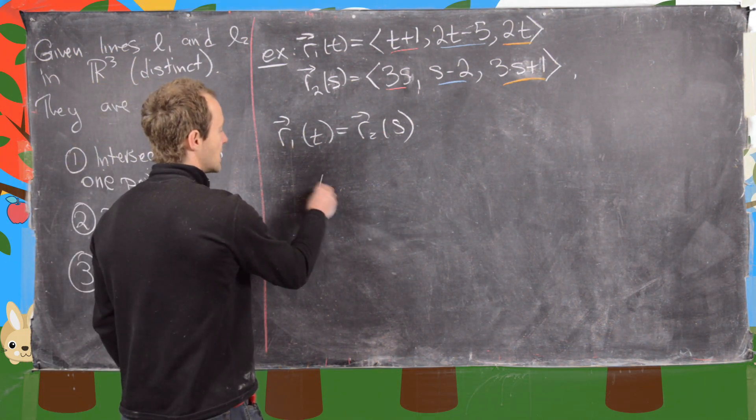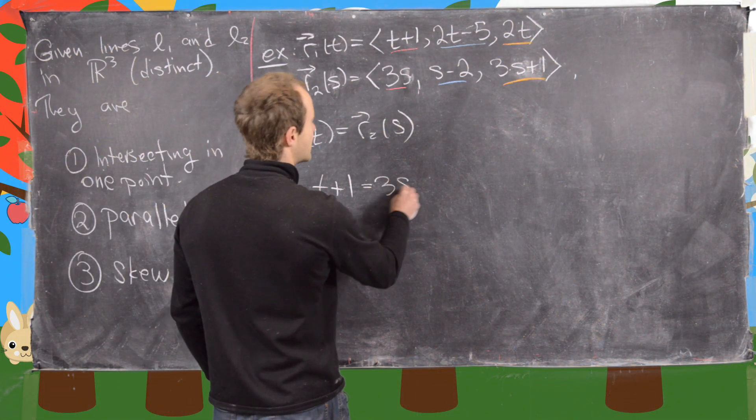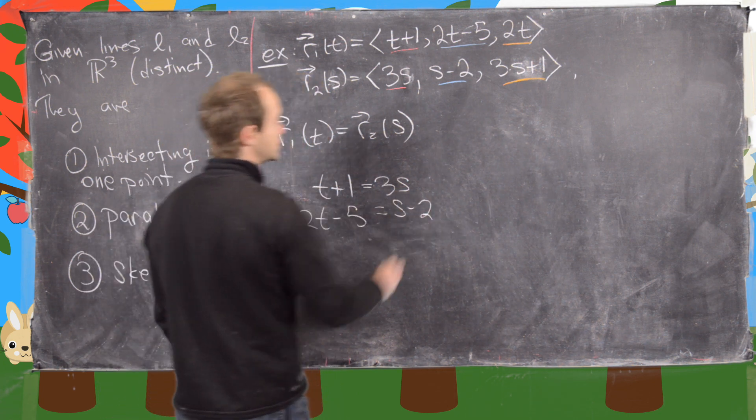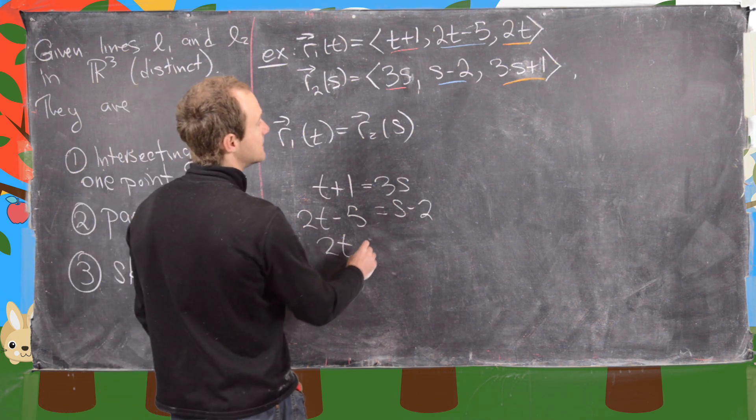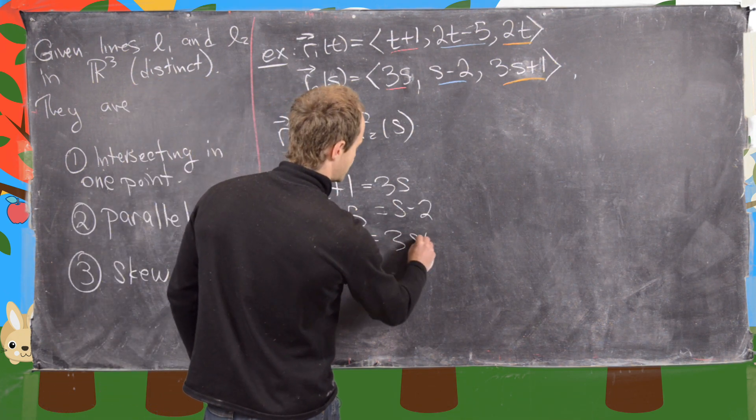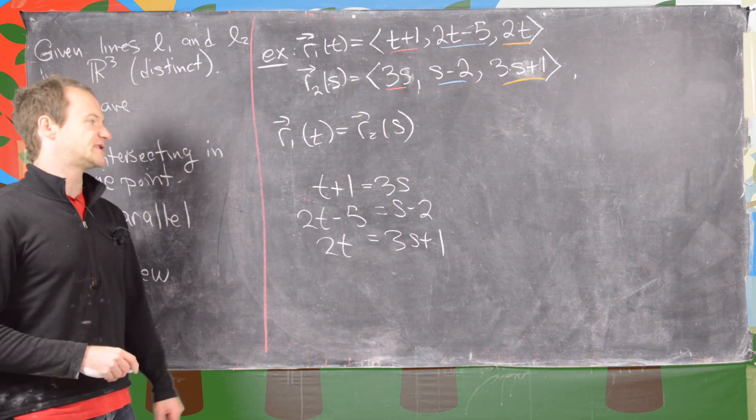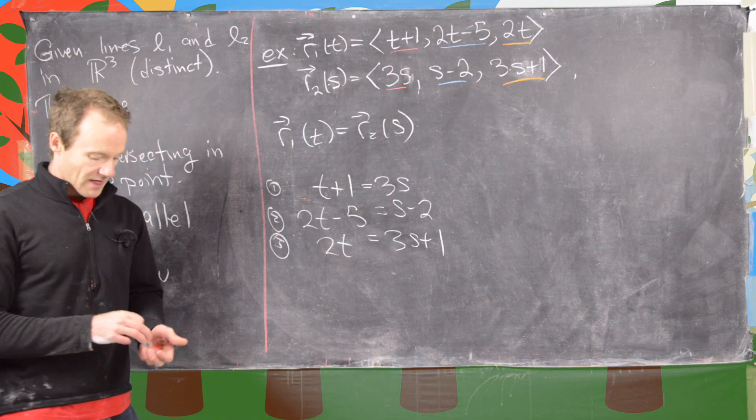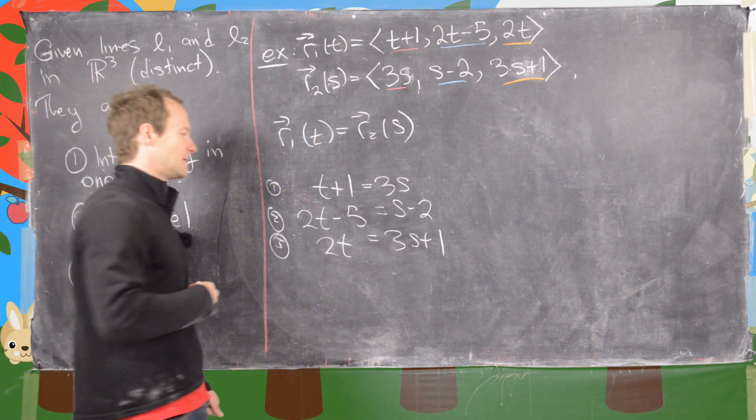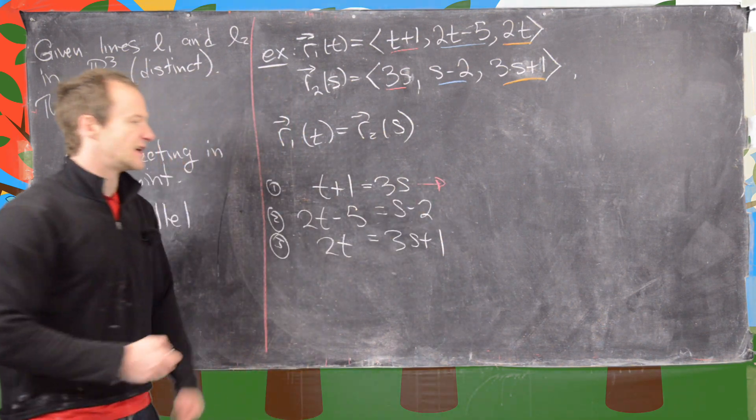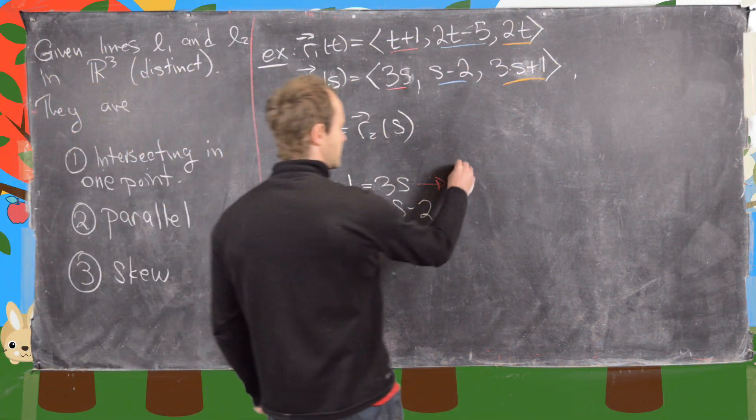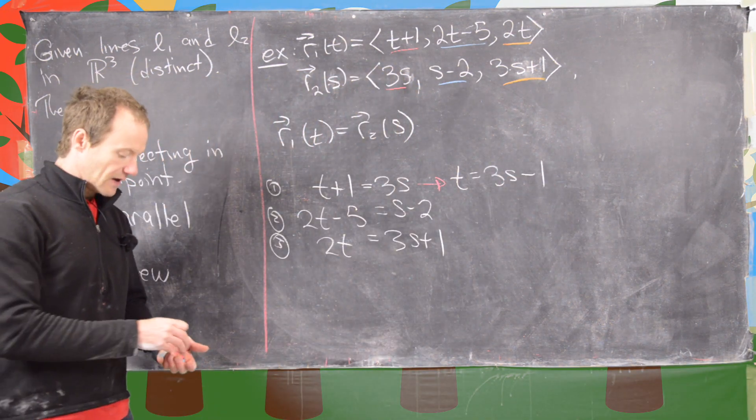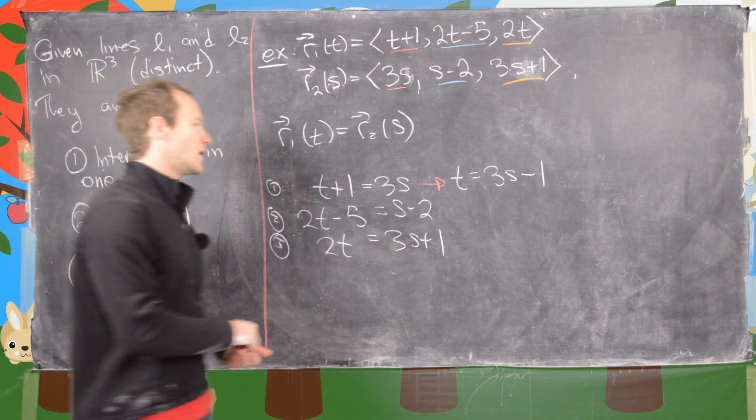Let's write that down. We have T plus 1 equals 3S, 2T minus 5 equals S minus 2, and 2T equals 3S plus 1. I'll label these equations and use the substitution method. I can solve this equation for T, giving me T equals 3S minus 1, and then plug this into equation 3.